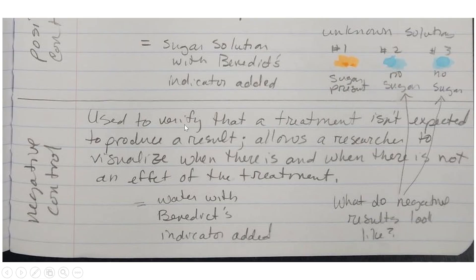Negative control is used to verify that a treatment isn't expected to produce a result. It allows a researcher to visualize when there is and when there is not an effect of the treatment. So once again, Benedict's solution indicates when there's sugar. So if I take a test tube that I know has nothing in it but water, and I add Benedict's solution to it and see what the color is, then I can compare and see for unknown solutions what it's going to look like.